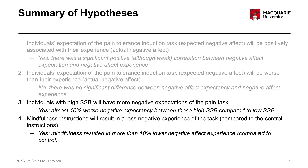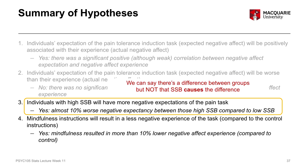With somatic symptom burden, we said that individuals with high somatic symptom burden would have more negative expectations, and that's exactly what we found. But what we can't say is that the reason their expectancies were different is due to their somatic symptom burden. All we can say is that there's a relationship between somatic symptom burden level and their expectations — a difference between groups — but we can't say that somatic symptom burden causes them to have different negative expectations. We didn't randomly allocate people to having high versus low somatic symptom burden.